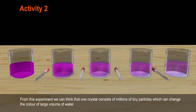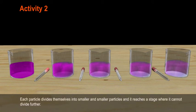From this experiment, we can think that one crystal consists of millions of tiny particles which can change the color of large volume of water. Each particle divides themselves into smaller and smaller particles and it reaches a stage where it cannot divide further.